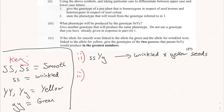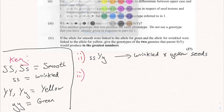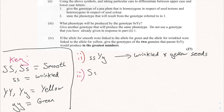Part three asks what phenotype is produced by the genotype capital S lowercase s, capital Y lowercase y. Go to your key: capital S lowercase s is smooth, and capital Y lowercase y is yellow. So the phenotype is smooth and yellow seeds.